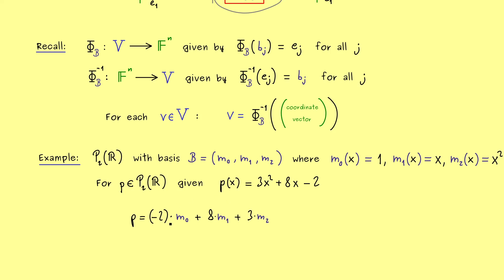and also 3 times m2. And here please note we have to respect the order in the basis. And then you should see we find our coordinate vector as -2, 8, 3.